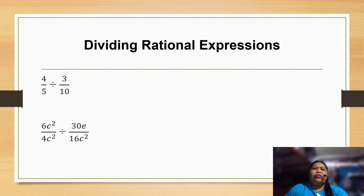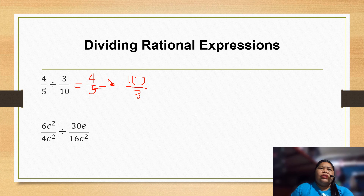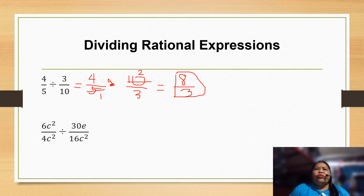So we have four-fifths divided by three-eighths. We write four over five, then change the operation to multiplication and get the reciprocal of three-tenths, which is ten over three. Through the cancellation method, we find the GCF of five and ten: five divided by five is one, ten divided by five is two.